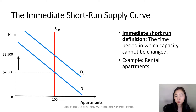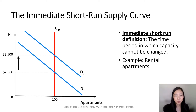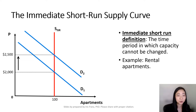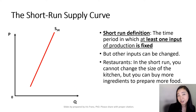Here is the immediate short run supply curve. Suppose you own an apartment building which has 100 apartments. If there is an increase in demand, well, in the short run you only have one apartment building. So if you don't want a shortage, the only thing you could do is to increase the rent.